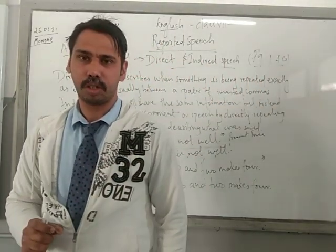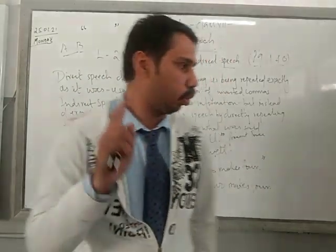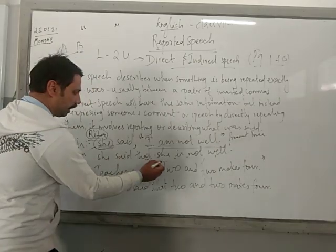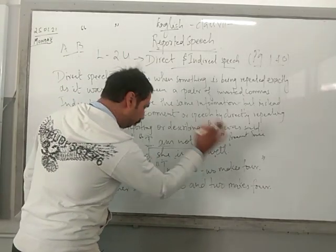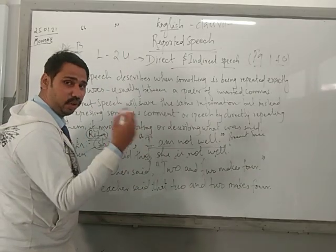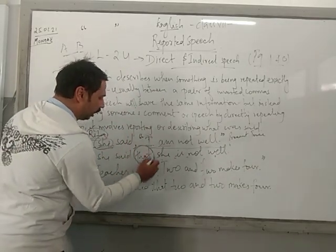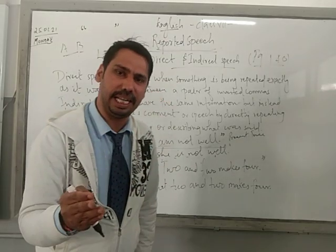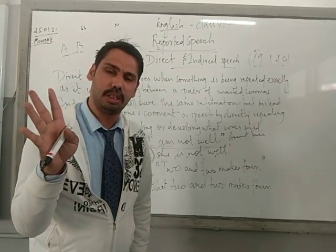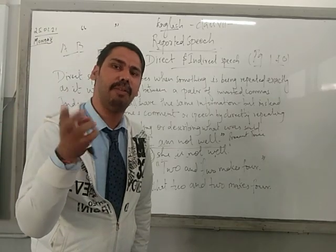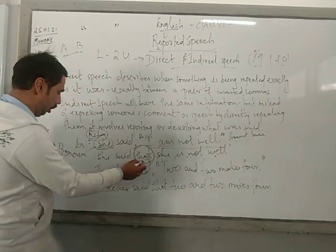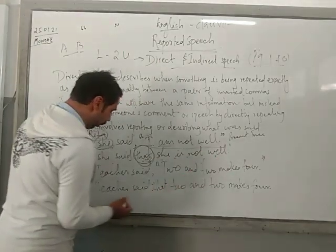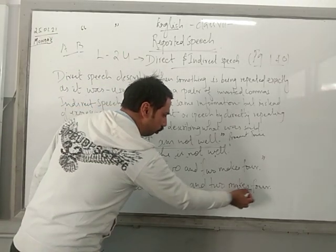When changing reported speech from direct to indirect, two things to take care of: first, we remove the inverted commas. Second, I will use 'that' as a conjunction joining the statement. So: she said that she is not well. Or for a fact: he said that 22 makes food — a universal truth does not change.